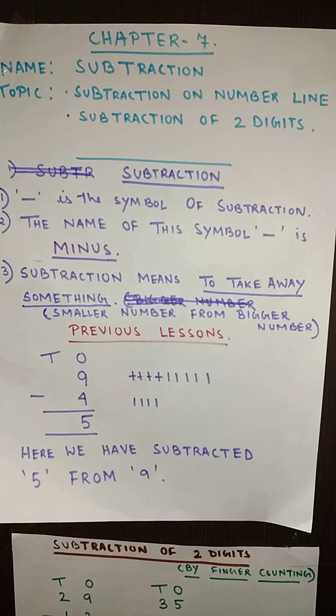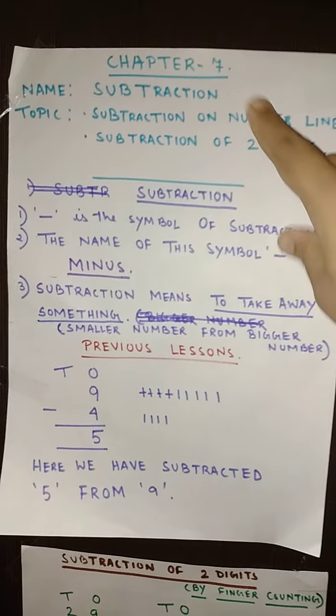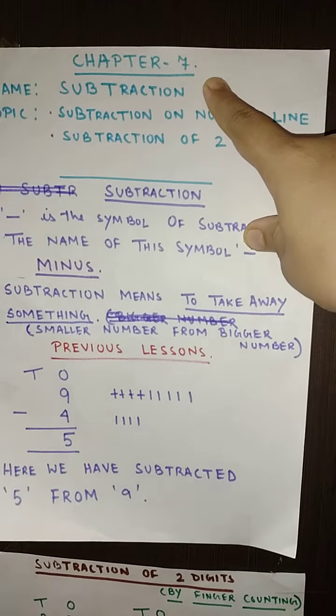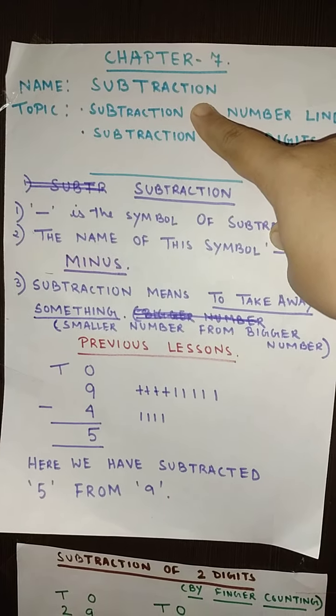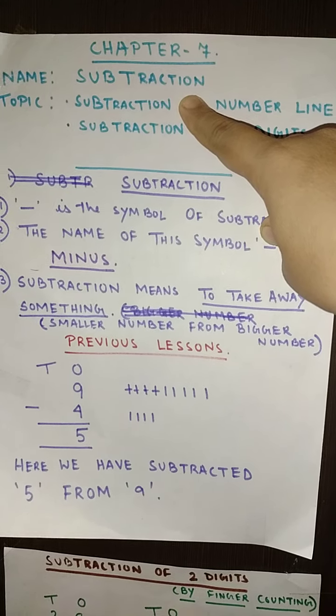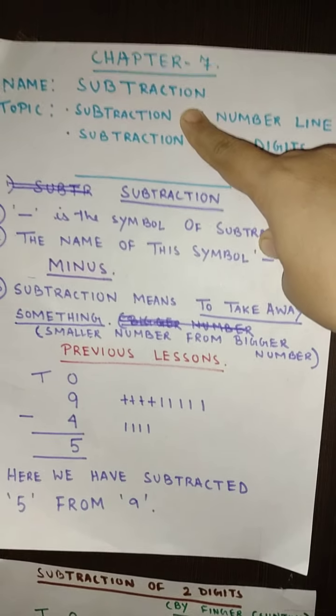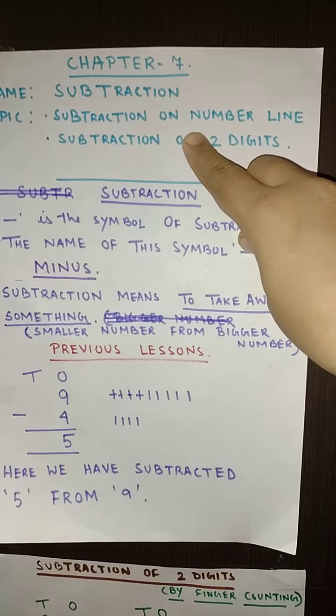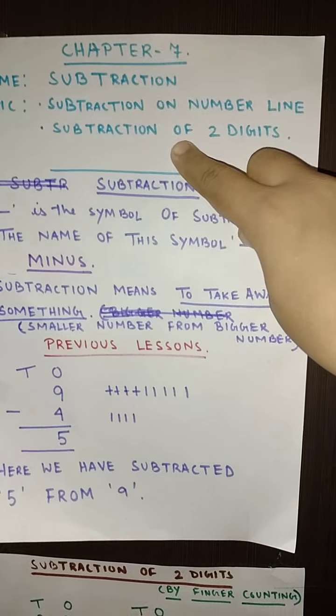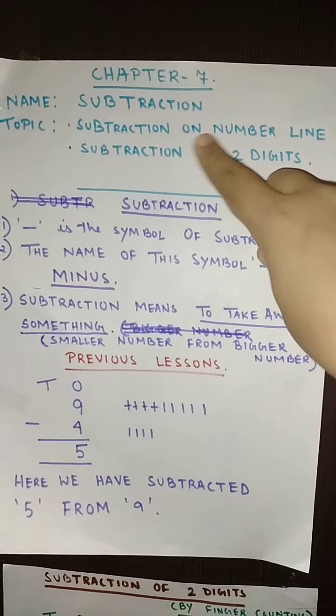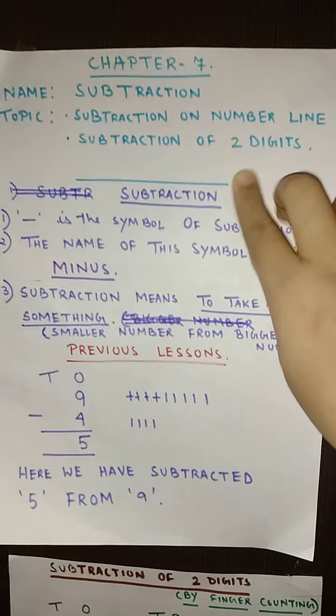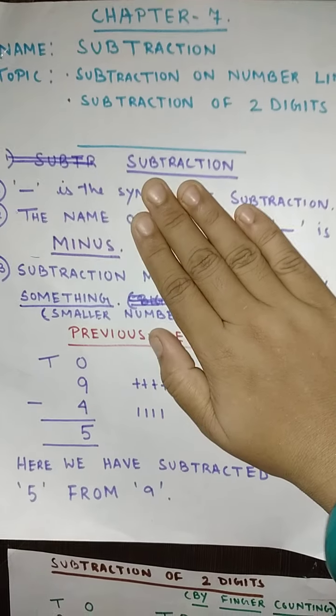Namashiva students, with Amma's grace I think you are in good health. Now we have finished with chapter number 6 and today we are going to start with chapter number 7. And the name of the chapter is subtraction. Now subtraction is not a new chapter for you because you have already done a little bit of subtraction in your previous class. So still we will do something more here. And today we are going to learn the subtraction on number line and subtraction of two digits.